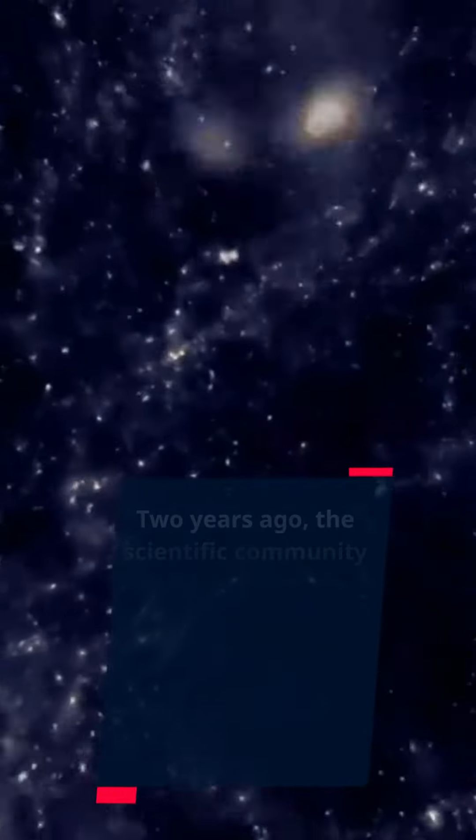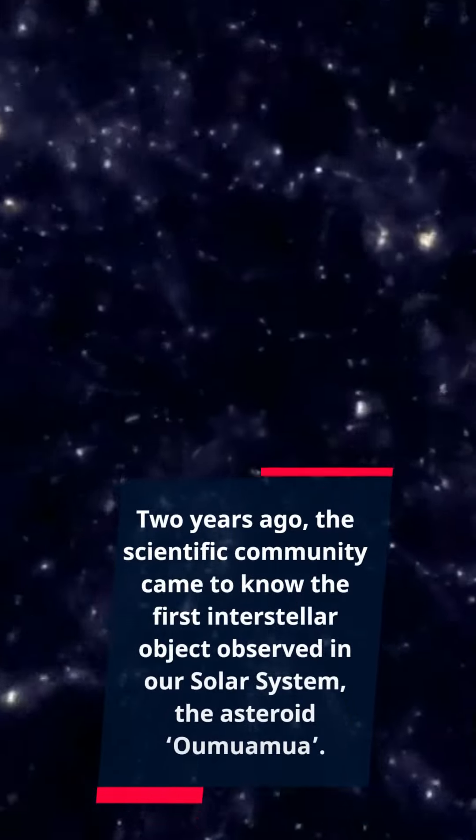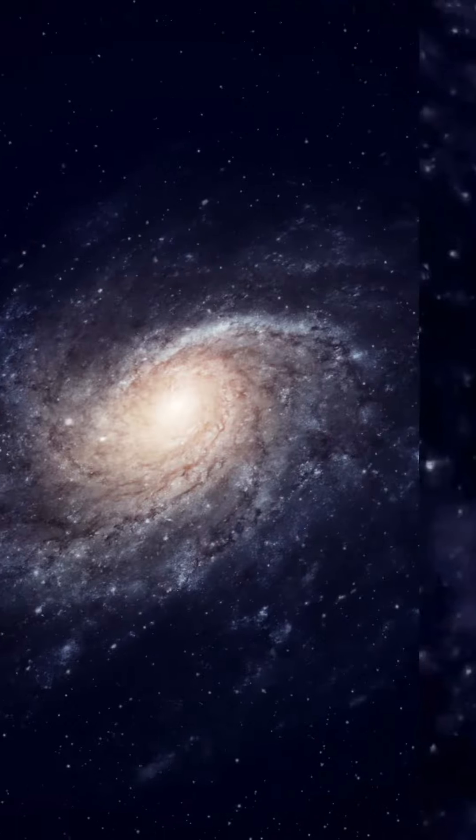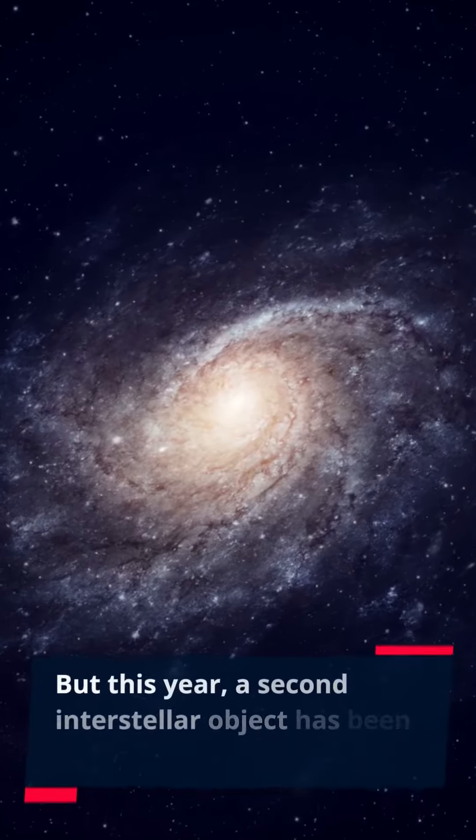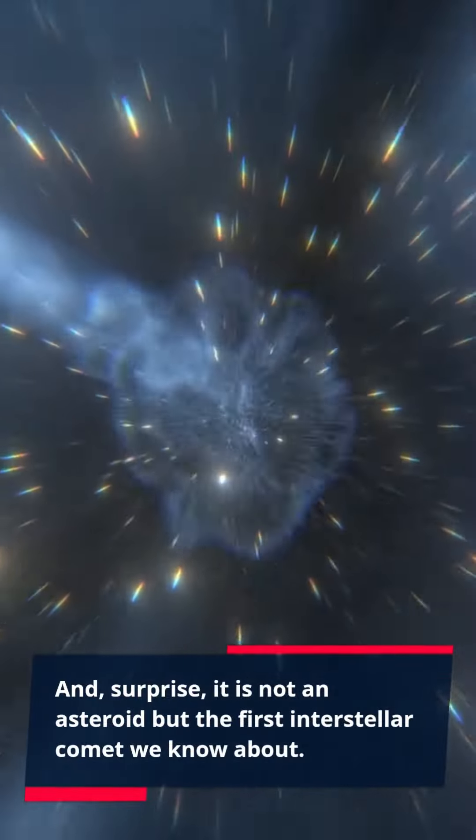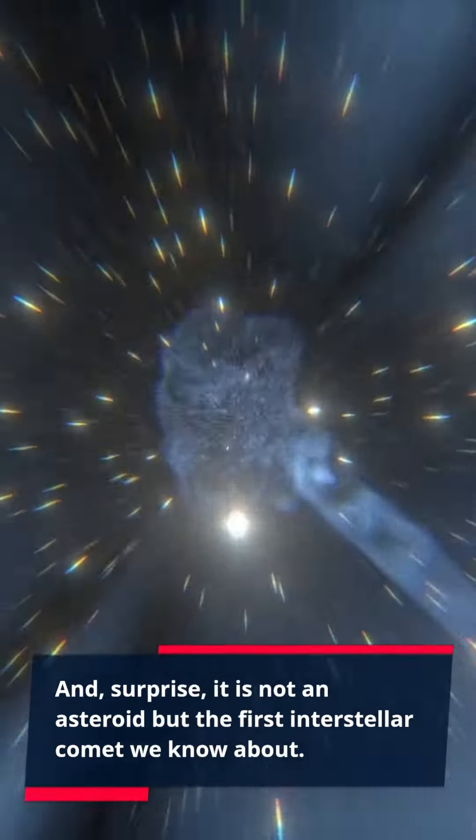Two years ago, the scientific community came to know the first interstellar object observed in our solar system, the asteroid Oumuamua. But this year, a second interstellar object has been discovered. And, surprise, it is not an asteroid but the first interstellar comet we know about.